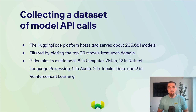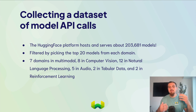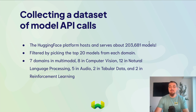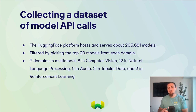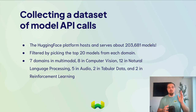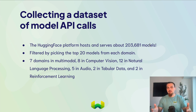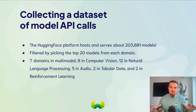Starting off collecting a dataset of model API calls — they're taking models from PyTorch Torch Hub, TensorFlow Tensor Hub, and of course Hugging Face. The Hugging Face platform hosts and serves about 203,681 models. Research like HuggingGPT treats these pre-trained models like tools that some orchestrating model would want to call — image generation, image segmentation, natural language inference, question answering. They filter these models by picking the top 20 models from each domain: seven in multimodal, eight in computer vision, 12 in NLP, five in audio, two in tabular data, two in reinforcement learning.